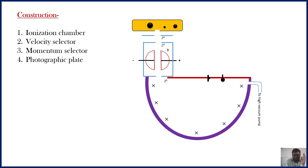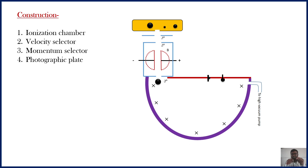Now consider a third ion having larger mass than the previous two ions. It passes through the velocity selector and enters into the momentum selector through slit S3. Again, due to the perpendicular magnetic field, this ion takes a circular path, but in this case the radius is larger than the previous two cases. As soon as it strikes the photographic plate, a line is marked. So the number of lines on the photographic plate tells us the number of isotopes present in the given material.